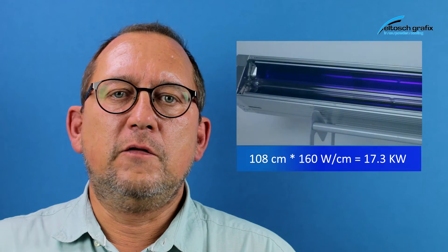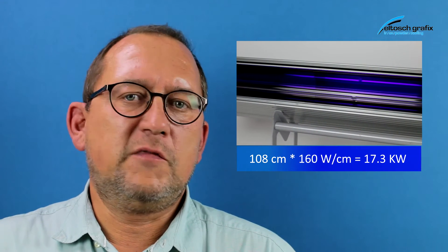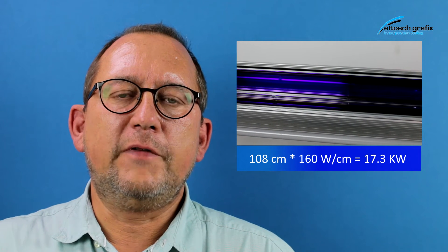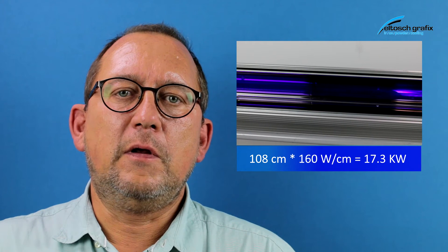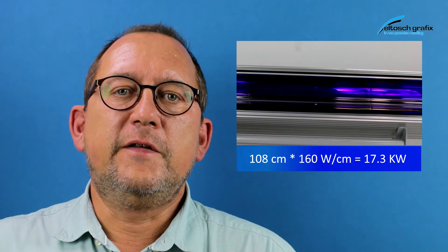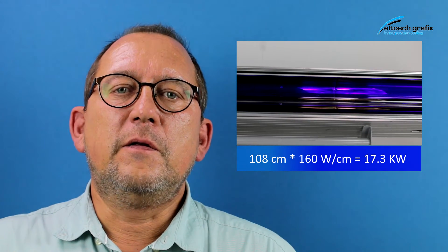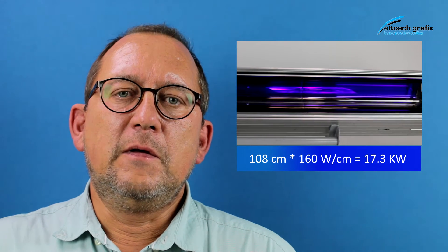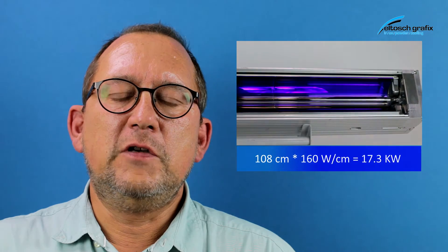The first important value for a UV system is the electrical input, which is measured in watt per centimeter. In a standard UV bulb of a 3B press 70 by 100, you put in approximately 17 kilowatt of electrical energy into a 108 centimeter wide bulb. This does not mean the UV output — the UV output in energy is far less than the electrical input.